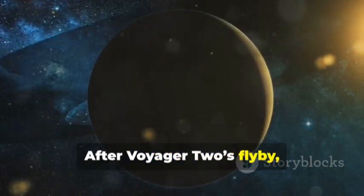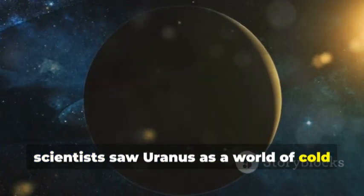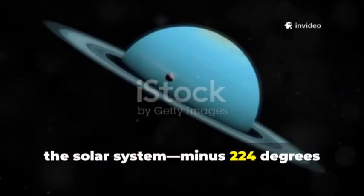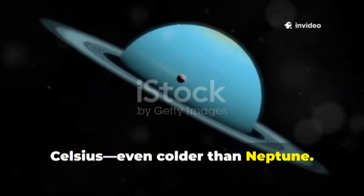After Voyager 2's flyby, scientists saw Uranus as a world of cold and quiet. Its upper atmosphere was the coldest in the solar system, minus 224 degrees Celsius, even colder than Neptune.